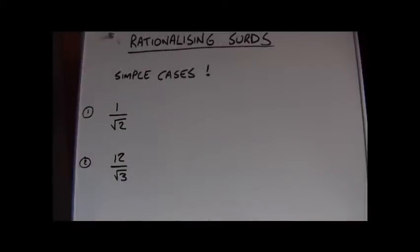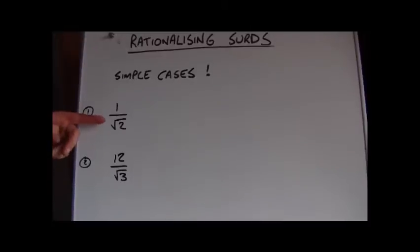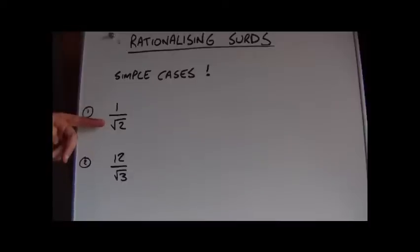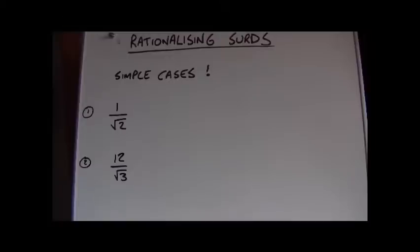In this video we're going to look at how to rationalize surds. Rationalizing surds means to take an expression where we've got a surd in the denominator — the bottom of a fraction — and rewrite it so that it has the same value but there's no longer a surd in the bottom of the fraction.